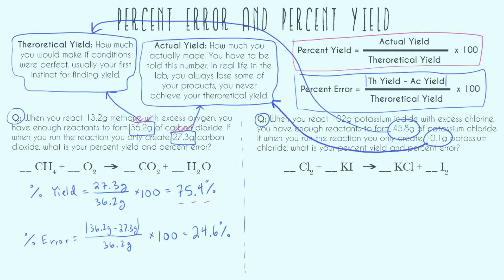So 10.1 grams, that's our actual yield. We can already tell, uh-oh, it wasn't very good, right? We could have created 45.8, we only made 10.1. So let's go ahead and plug into percent yield first.